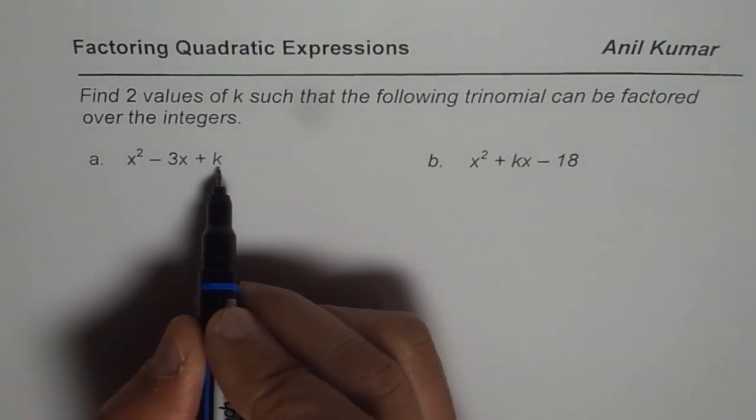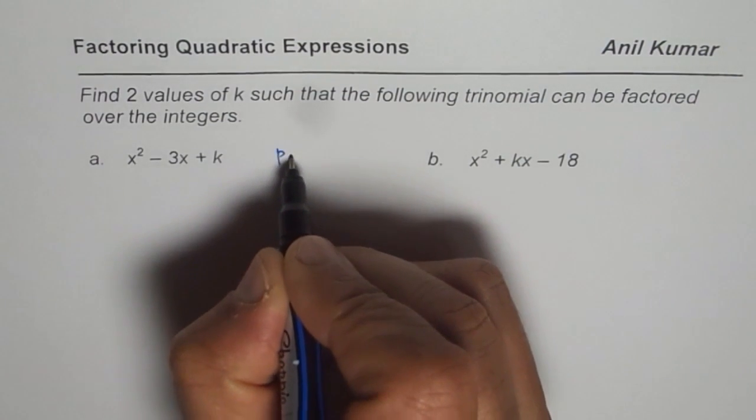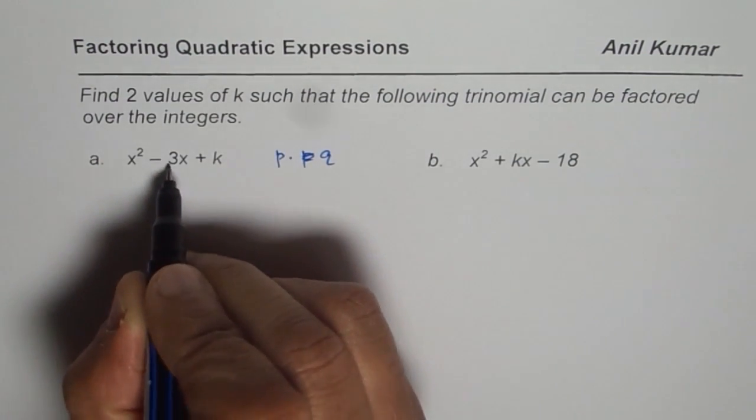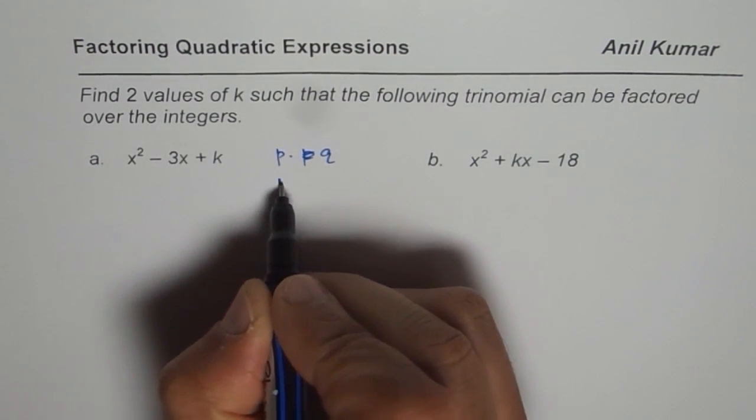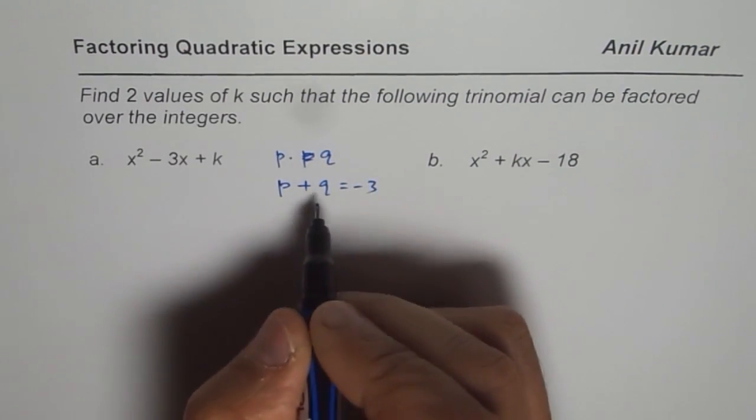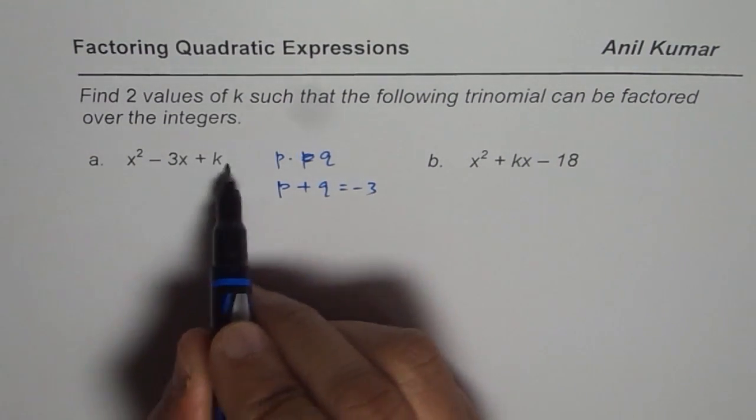Here k is a constant. Now k should be the product of two numbers, let us say p and q, and minus 3 should be the sum of those two numbers. That will give us the values which k can have so this can be factored.